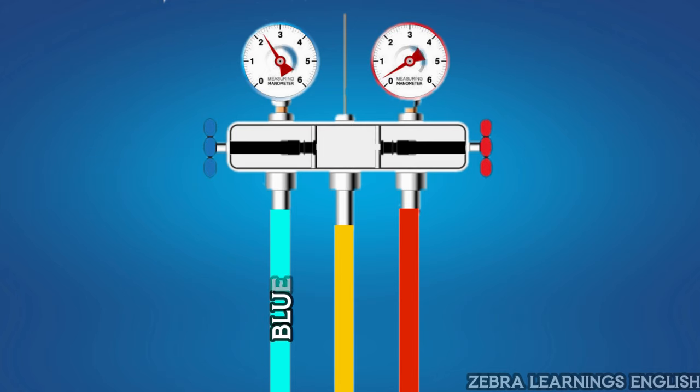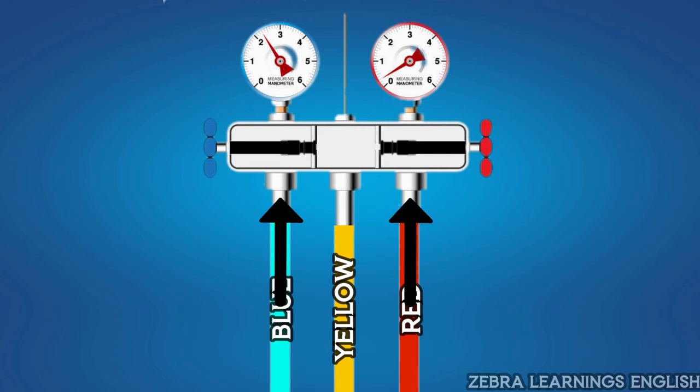This is the blue hose, this is the yellow hose, and this is the red hose. The blue hose and red hose are directly connected to the gauge. Yellow hose is connected in common to both.